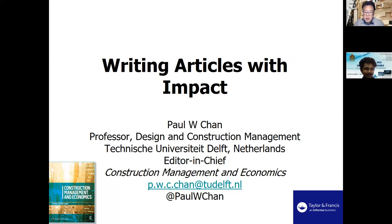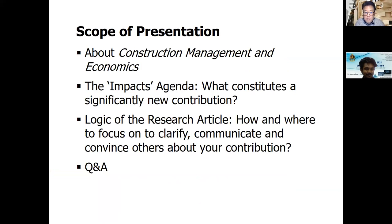It's a Taylor and Francis journal. I want to focus a bit on the impacts agenda and why that is really quite important, and also to start thinking about how we can actually demonstrate impacts in our articles. To do that, I'm going to share some ideas about the logic of the research article, so that you can identify how and where to focus in terms of clarifying, communicating, and convincing others about the impacts of your contribution. There will be time at the end for Q&A.